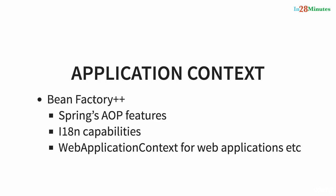The application context provides more features than a bean factory — all the features typically needed by enterprise applications. You can call the application context bean factory plus plus. Examples of extra features include Spring AOP, which we'll discuss in a later section, and internationalization — the ability to customize text based on the user's locale. For example, showing dollars for US users and yen for users from Japan. Application context also provides capabilities like web application context for web applications.